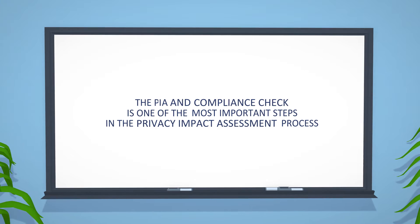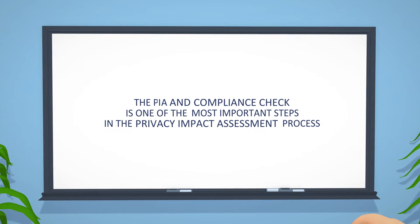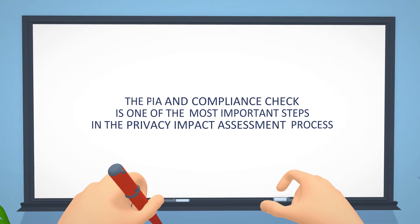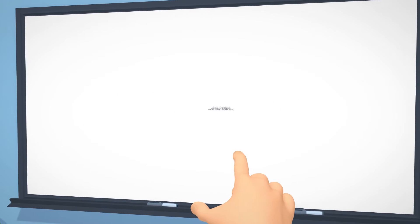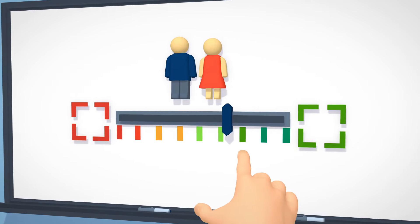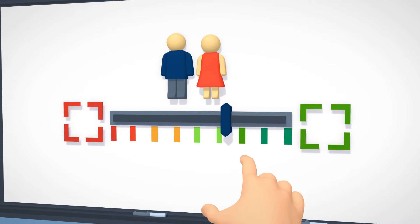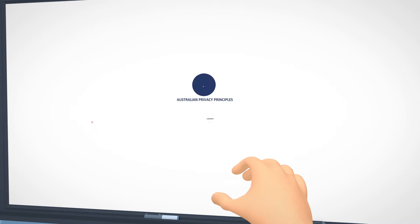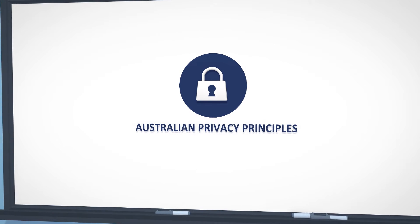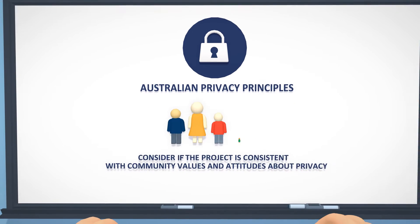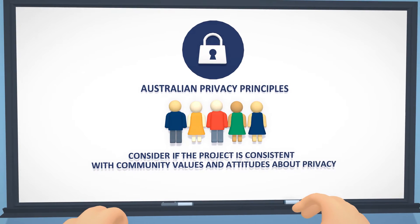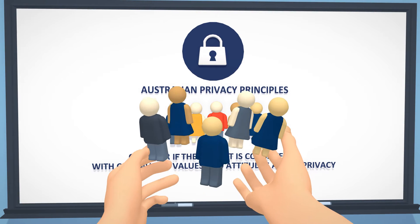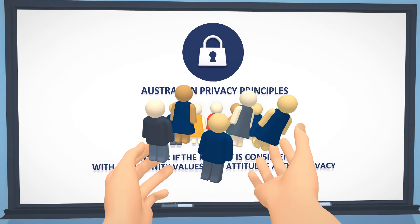The Privacy Impact Analysis and Compliance Check is one of the most important steps in the PIA process. Here, you need to identify and critically analyse how the project affects privacy, both positively and negatively. It's not just about compliance with the Australian Privacy Principles. You also need to consider if the project is consistent with community values and attitudes about privacy. The results of your stakeholder consultation will help with this.